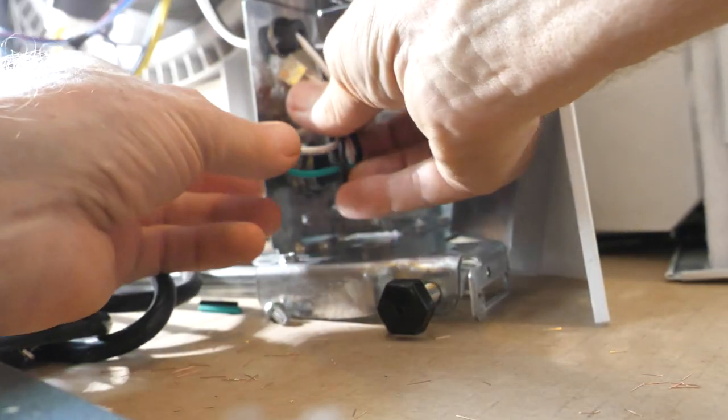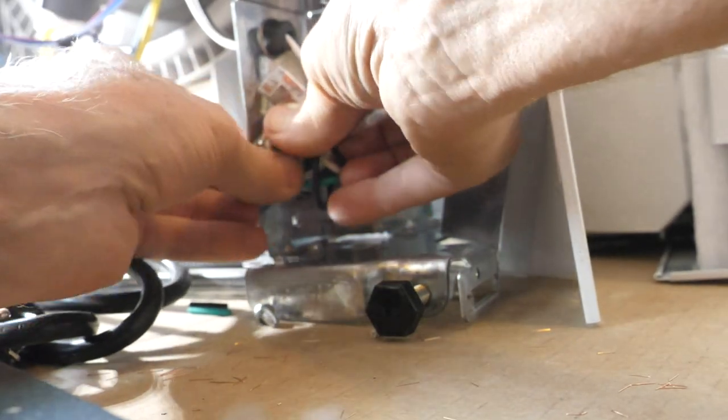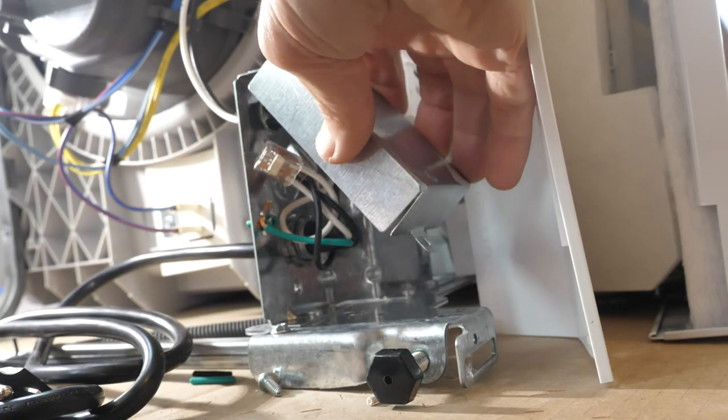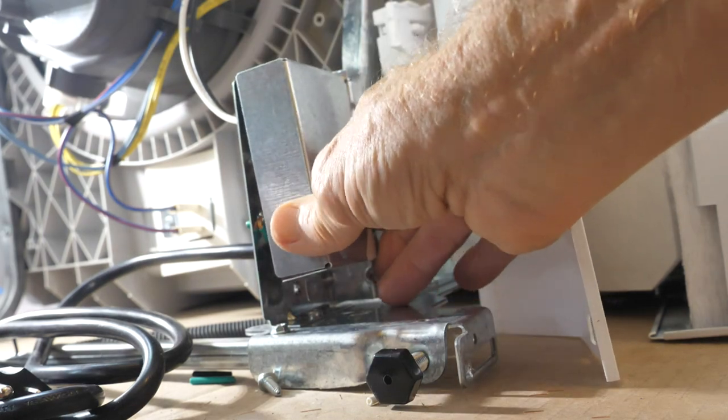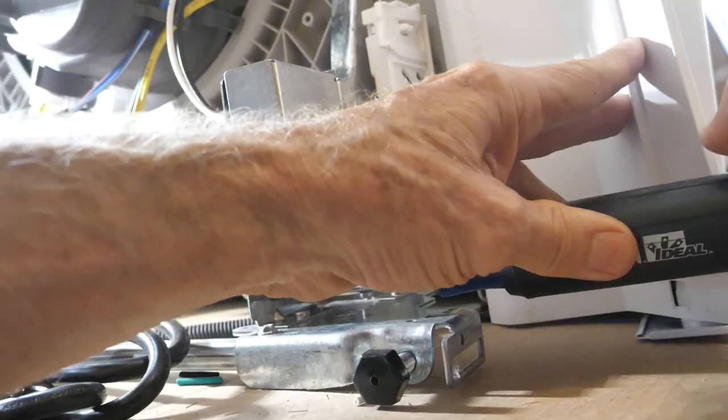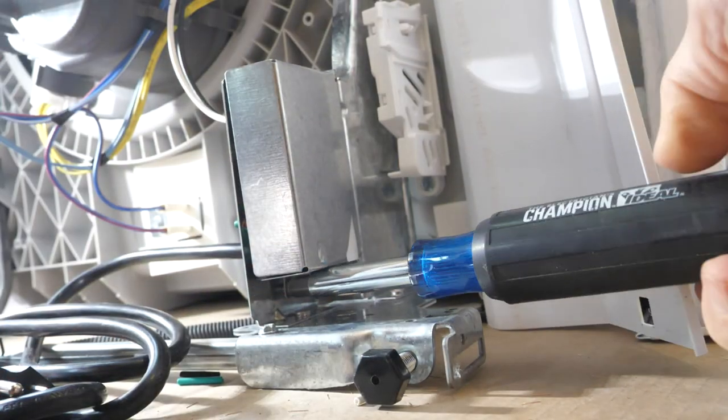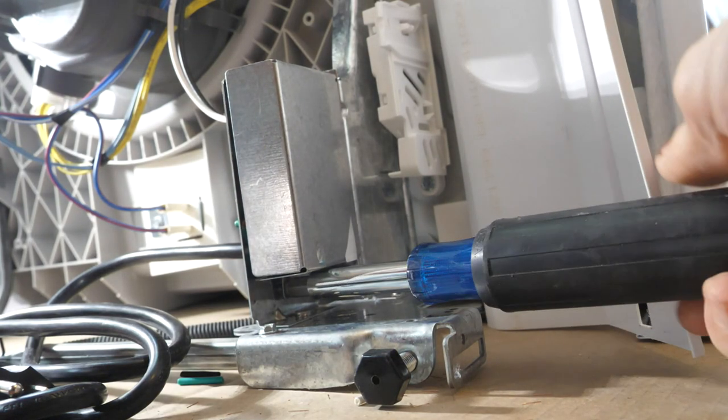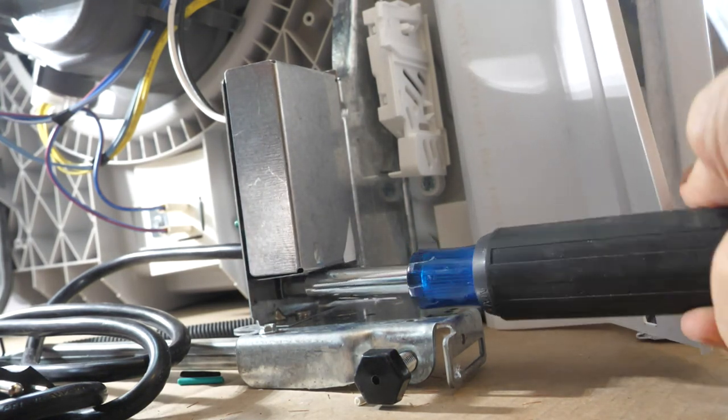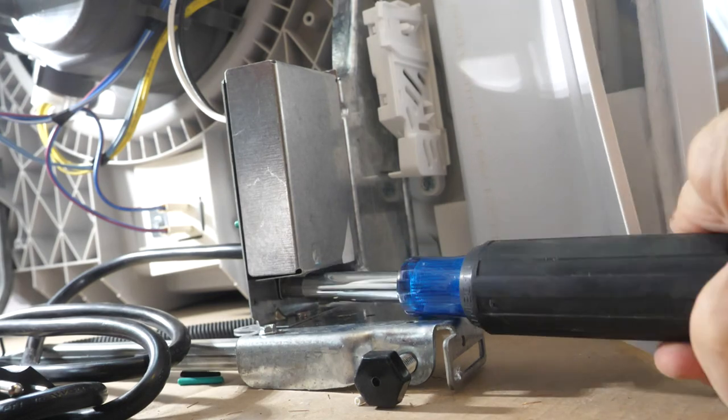Now tuck the wires into the box. You have to make sure that the wires don't get pinched when you close the box up. Use a 5/16 inch nut driver to fasten the box. If you can magnetize your nut driver, it'll make the job easier.